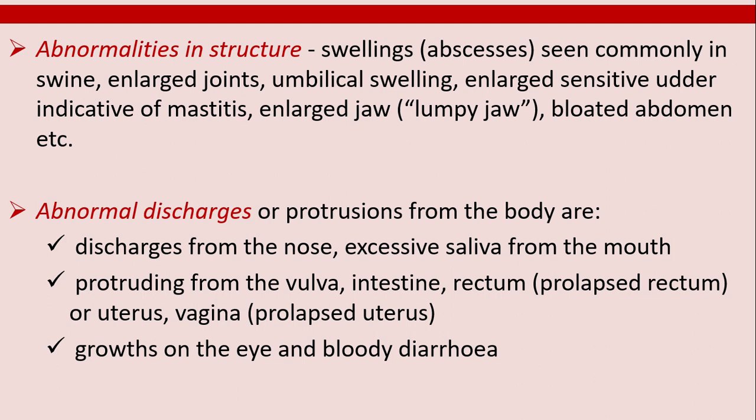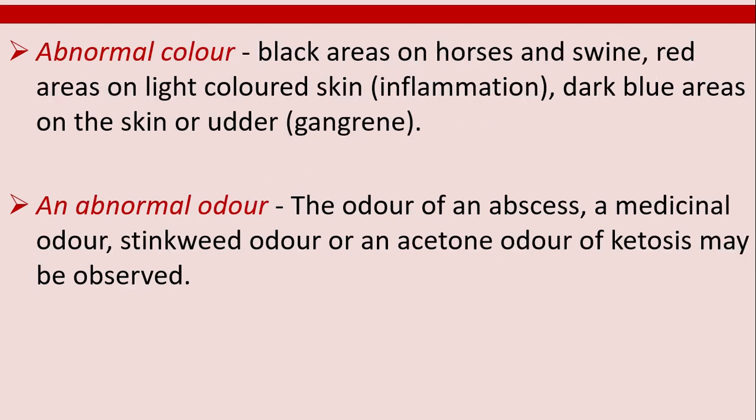Other abnormal discharges include growths on the eye and bloody diarrhea. Abnormal color includes black areas on horses and swine, red areas on light-colored skin, and dark blue areas on the skin or udder. Abnormal odor may include the odor of an abscess, a medicinal odor, stinkweed odor, or an acetone odor of ketosis.